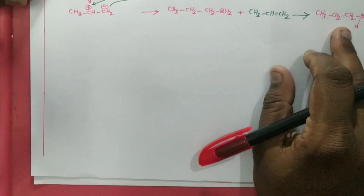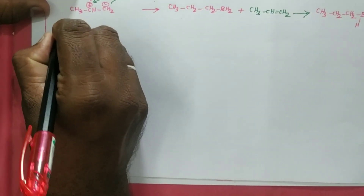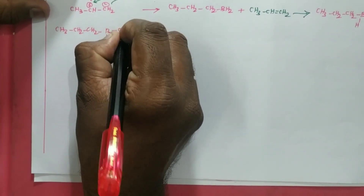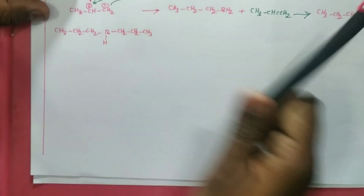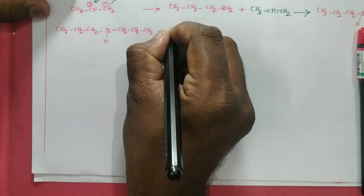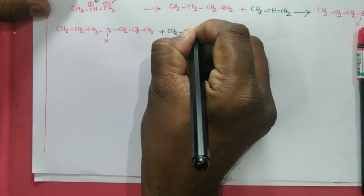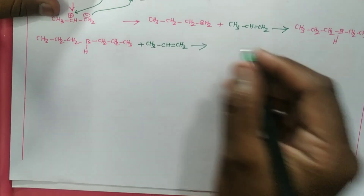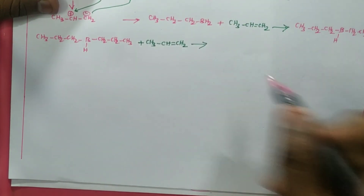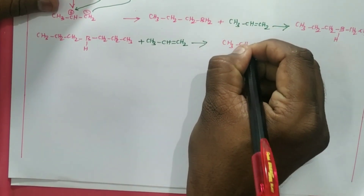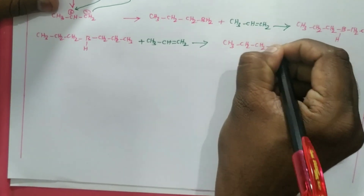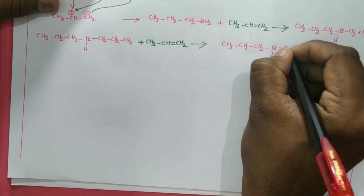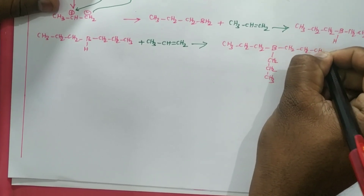This intermediate — CH3-CH2-CH2 on boron with one hydrogen and a CH2-CH2-CH3 group — reacts with a third molecule of CH3-CH=CH2. Now instead of one hydrogen, one more alkyl group attacks boron. The product has CH3-CH2-CH2 (×3) groups, with CH3 groups attached on each side.